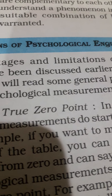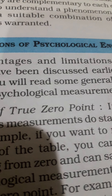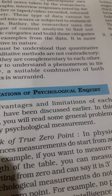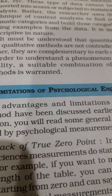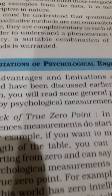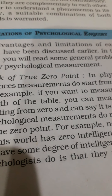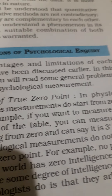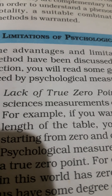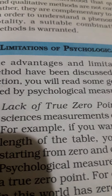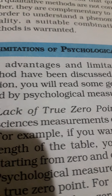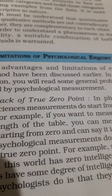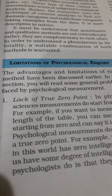In our previous videos when we discussed about different psychological enquiries, we discussed about advantages and limitations of those methods. Today we will discuss some problems of psychological measurement which are general in nature. The first one is lack of true zero point. In physical science we know that we start our measurement assuming zero as the starting point. But though psychology is a science, still there is no true zero point in psychology.